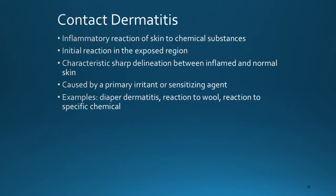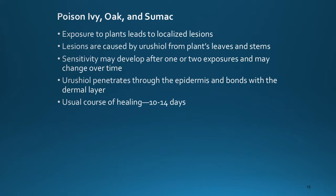Contact dermatitis is an inflammatory reaction of the skin to chemical substances. The initial reaction takes place in the exposed area, with characteristic sharp delineations between inflamed and normal skin. It is caused by a primary irritant or sensitizing agent. Examples include diaper dermatitis, reaction to wool, or reaction to a specific chemical. Poison ivy, oak, and sumac lesions are caused by the oil urushiol, found in the plants' leaves and stems, leading to localized lesions. Sensitivity is not inborn but may develop after one or two exposures. The urushiol penetrates through the epidermis and bonds with the dermal layer, and the usual course of healing is 10 to 14 days.